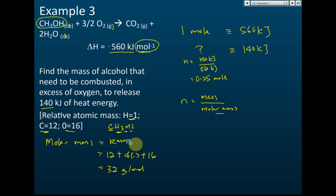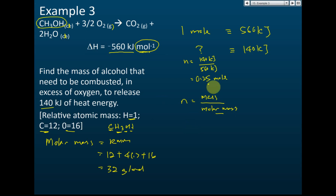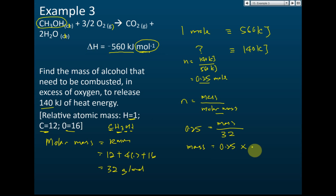The relative molecular mass is the sum of relative atomic masses: one carbon (12), four hydrogens (4 × 1), and one oxygen (16), giving 32 g/mol. Now using number of moles = mass / molar mass: 0.25 = mass / 32, so mass = 0.25 × 32 = 8 grams. The mole here refers to alcohol.